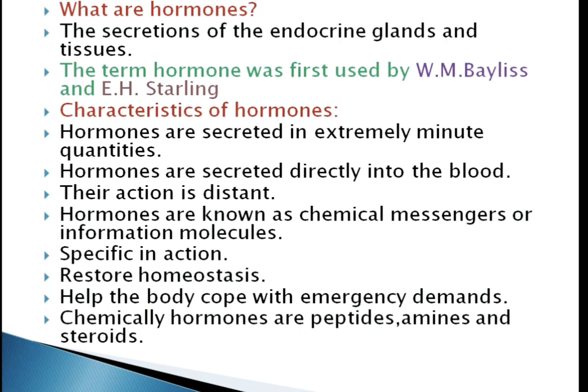Hormones produced in one species usually show similar influence in other species. Hormones help adjust and restore homeostatic balance. Hormones help the body cope with emergency demands. Chemically, some hormones are peptides like insulin, which are water soluble, whereas some are amines, which are derived from amino acids.